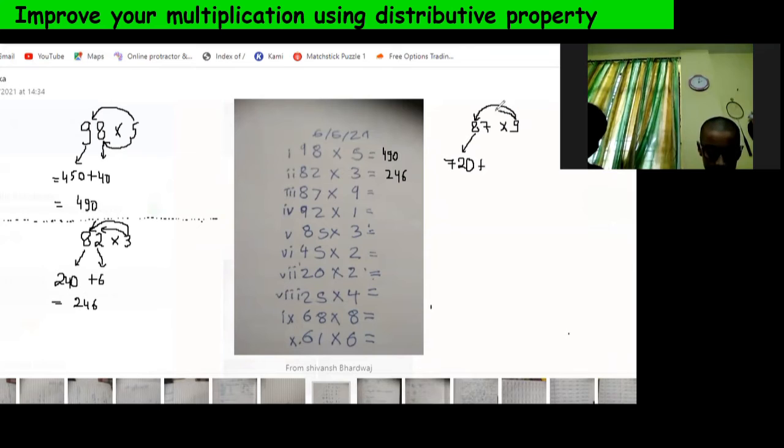I have multiplied 7 into 9. Then I have added 720 and 63. 720 plus 63 is 783.